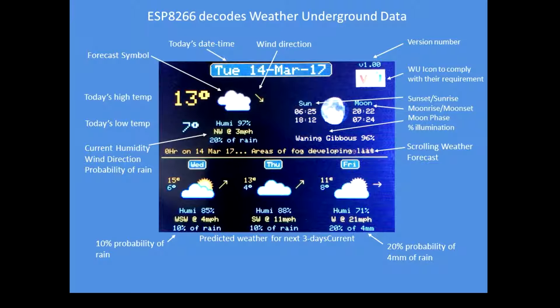At the top right is the Weather Underground icon, which is required to keep within the terms and conditions of displaying Weather Underground data. You will need to get a Weather Underground developer API key, which you can get free of charge by going to their webpage and signing up as a developer.